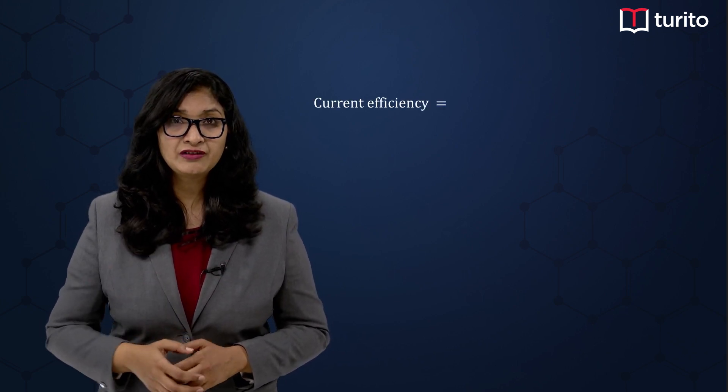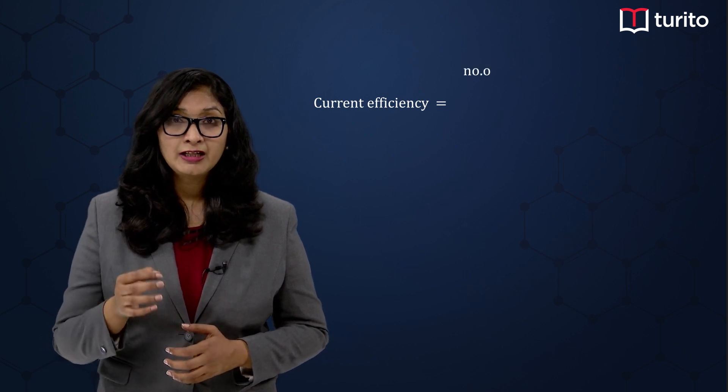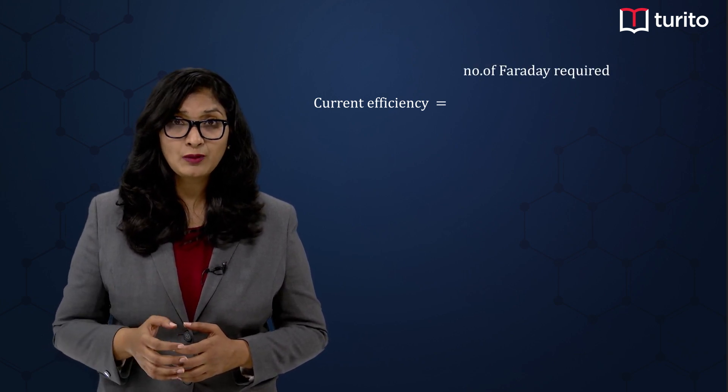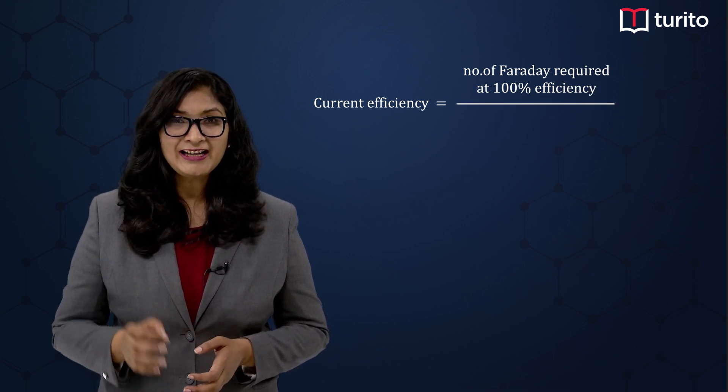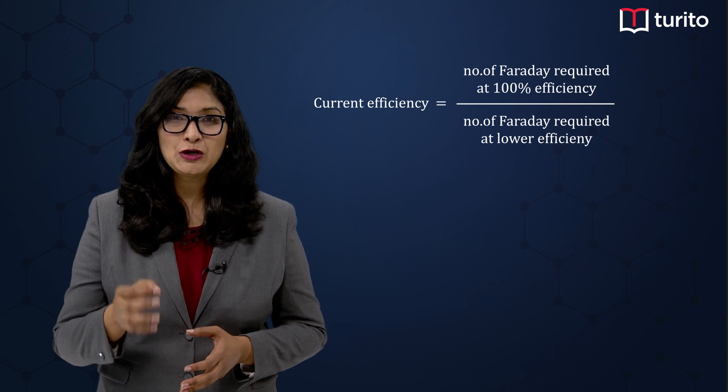Let me give you a very easy formula to calculate the current efficiency. Current efficiency will be equal to number of Faraday which is required when the efficiency is 100% divided by number of Faraday which is required at lower efficiency times 100.